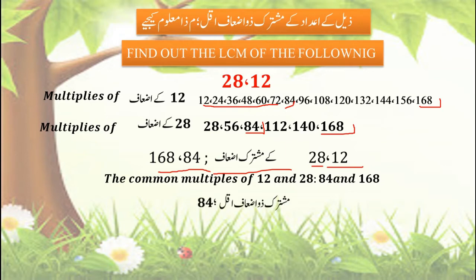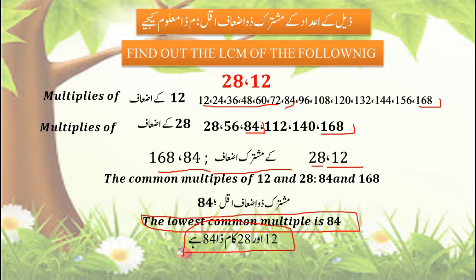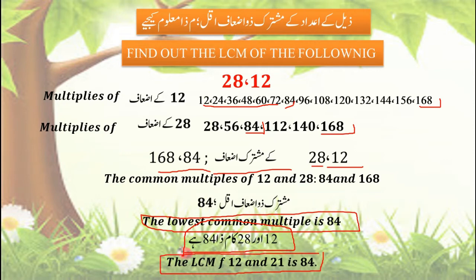The common multiples of 12 and 28 are 84 and 168. The lowest common multiple is 84. So the LCM of 12 and 28 is 84. Remember: tables are very important — if you know your tables, you can easily solve these problems.